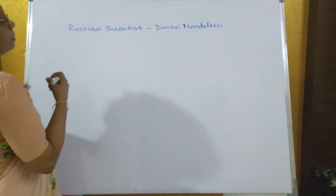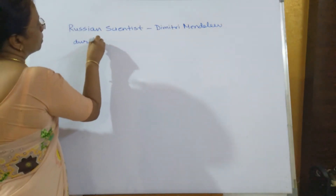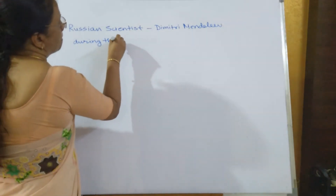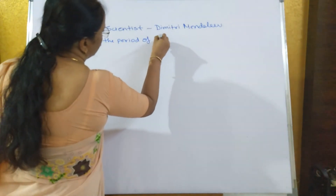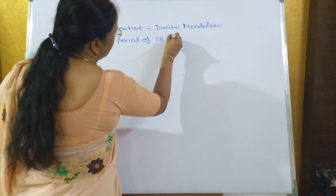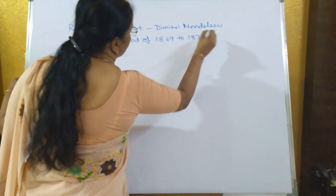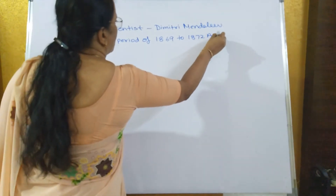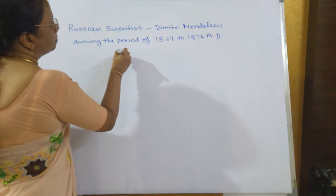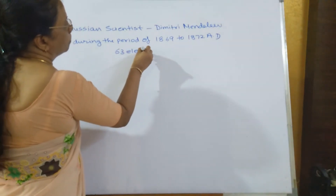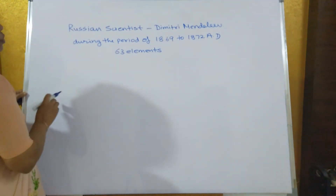He developed a periodic table during the period of 1869. During his time, 63 elements were known.